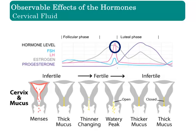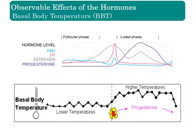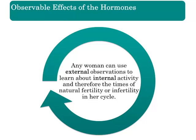Just prior to ovulation, estrogen levels fall, triggering a rapid rise in luteinizing hormone — the LH surge that triggers ovulation. With ovulation, progesterone levels increase, causing the cervical fluid to become thick and impermeable, acting like a barrier or plug to sperm. Progesterone also causes a rise in the woman's basal body temperature, or BBT. What is amazing about these changes is that any woman can use these external observations to learn about the internal activity and therefore the times of natural fertility or infertility in her cycle.